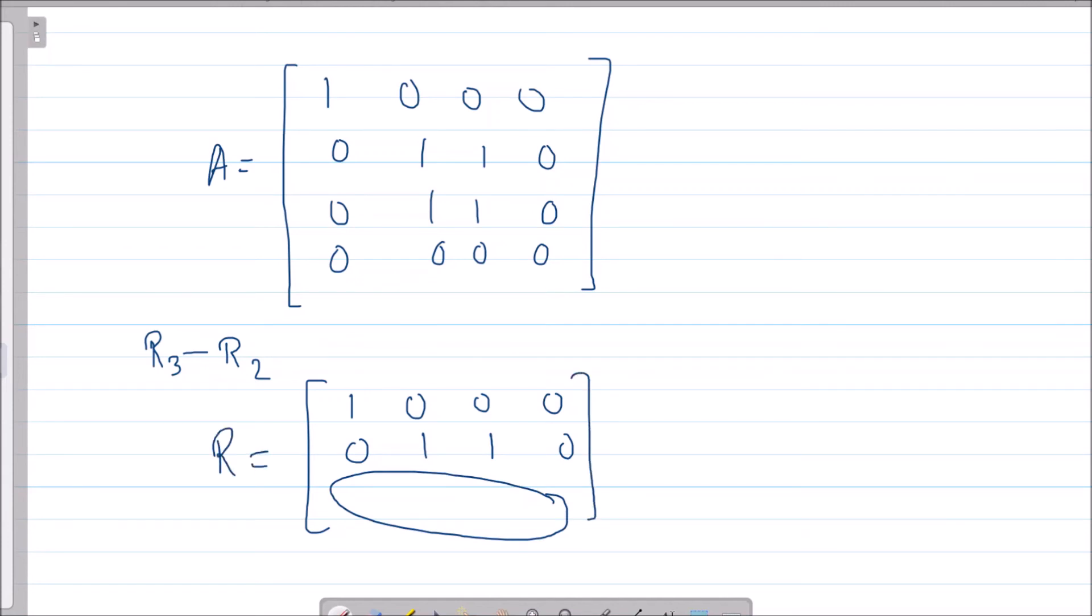If I take b = [1, 1, 1, 0], then let us try to see what is the rank of [A|b]. How will [A|b] look like? This is my [A|b].